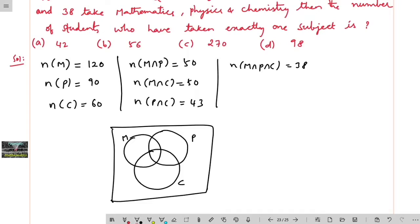So first let me enter the data: n of M intersection P intersection C is 38. So let me write 38 here, and n of M intersection P is 50, so 50 minus 38 will be 12 here, and n of M intersection C is 50 so here also you get 12. And n of P intersection C is 43 means here it will be 5.